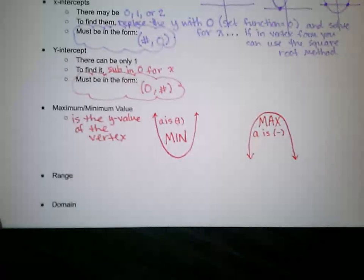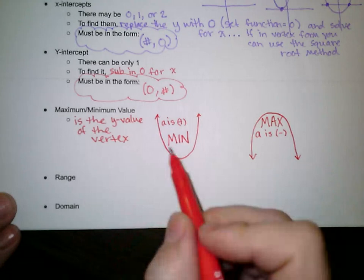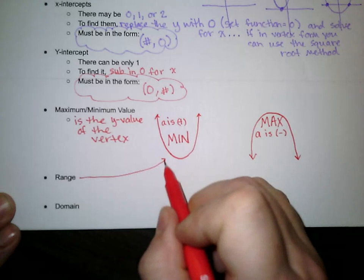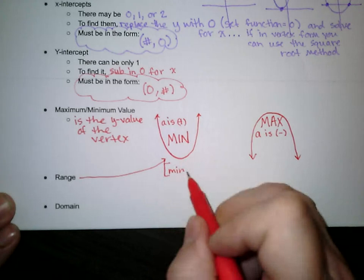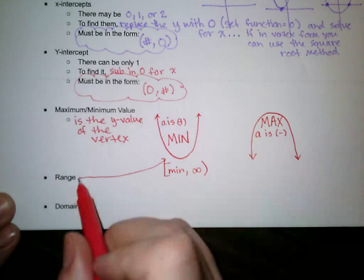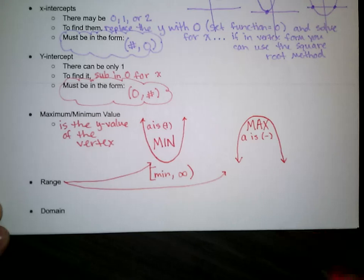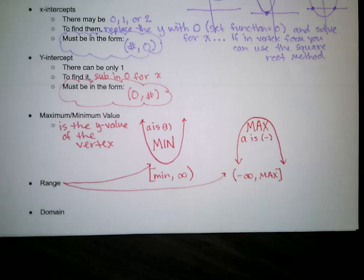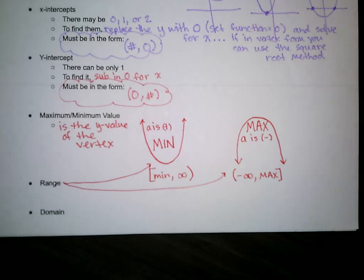The range is very closely related to the vertex. If we have a minimum value, the lowest value we'll have is the y-value of the vertex, and the parabola continues up towards infinity. If we have a maximum, the parabola goes from negative infinity up to that maximum value — so negative infinity up to the y-value of the vertex. The domain is the same for every parabola: since we have no variables in the denominator or inside an even-indexed radical, the domain is all real numbers, or negative infinity to infinity.